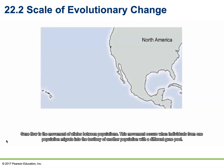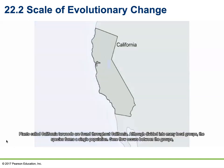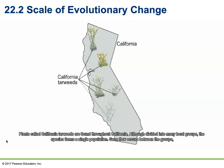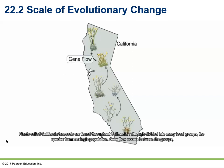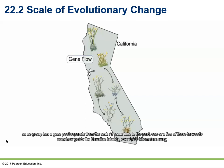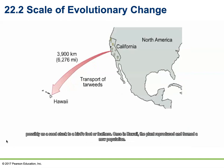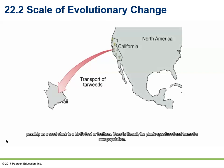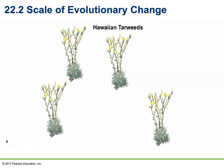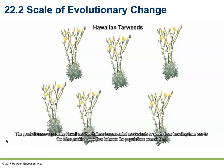Gene flow is the movement of alleles between populations, occurring when individuals from one population migrate into the territory of another with a different gene pool. California tarweeds are found throughout California as a single population with ongoing gene flow between groups. At some point in the past, one or a few tarweeds reached the Hawaiian Islands — over 3,900 kilometers away — possibly as seeds stuck to a bird's foot or feathers. Once in Hawaii, the plant reproduced and formed a new population. The great distance prevented further gene flow, so the gene pools of the two groups became reproductively isolated and evolved separately.